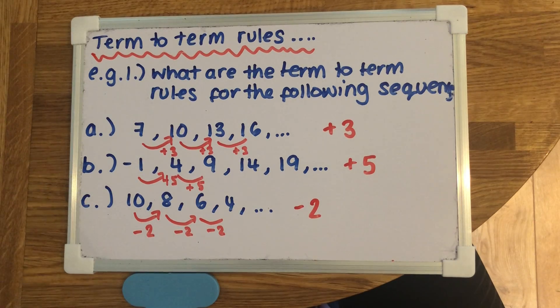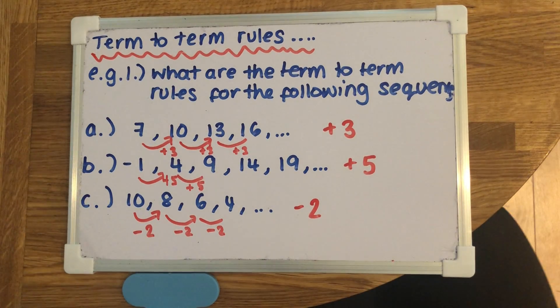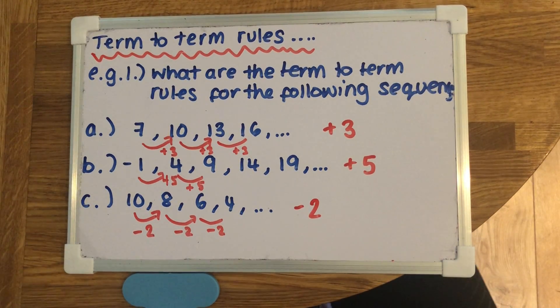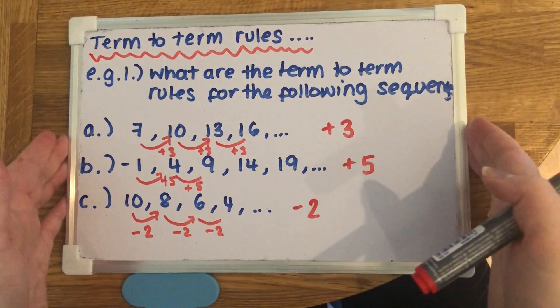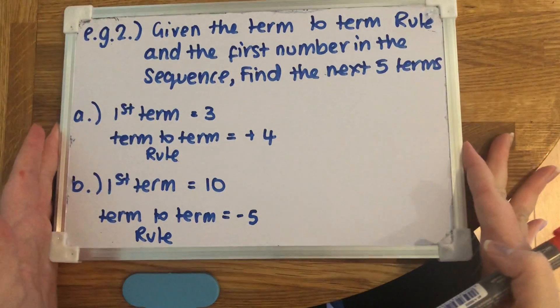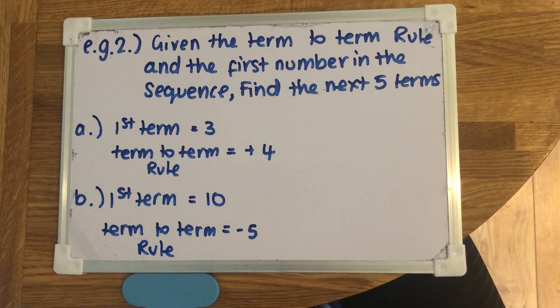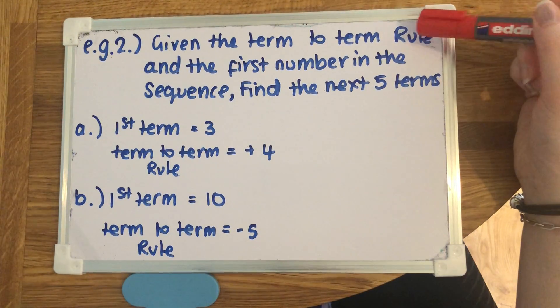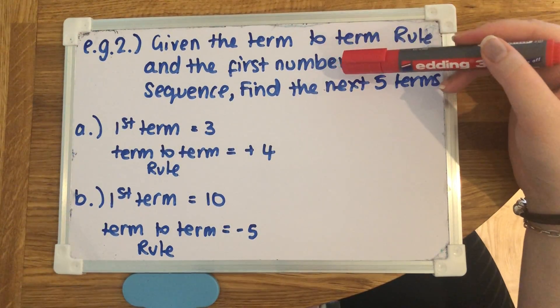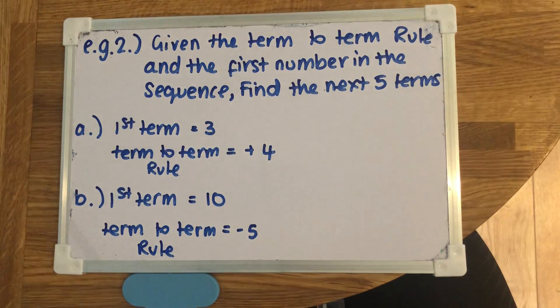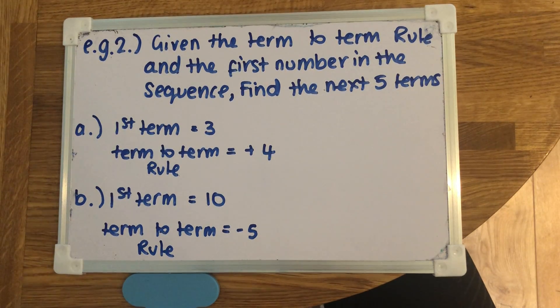For those ones, it's just as easy as that. Just look at the sequences and see what's happening each time. The next versions of the questions will be these. We've been given a term to term rule and we've been given the first number in the sequence. We need to find the next five terms.